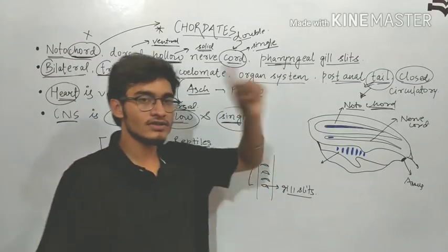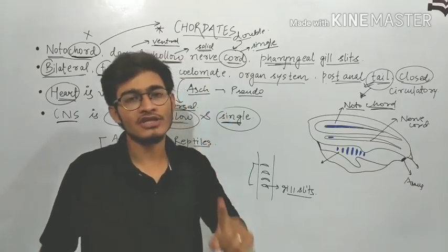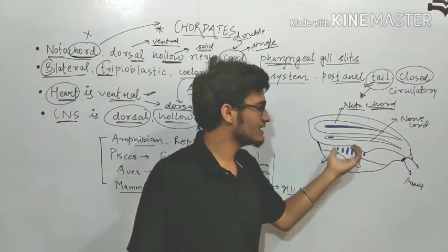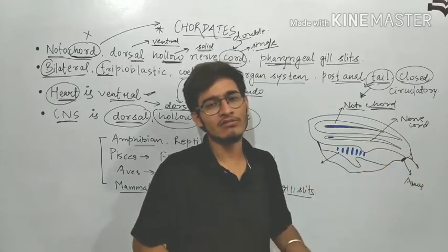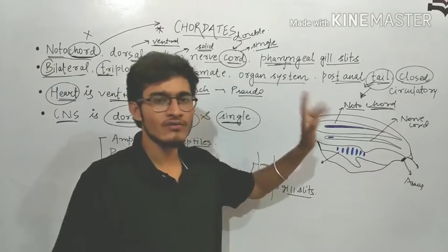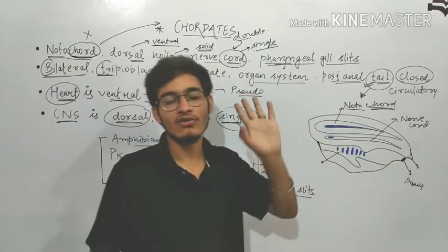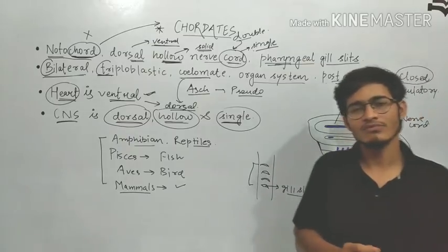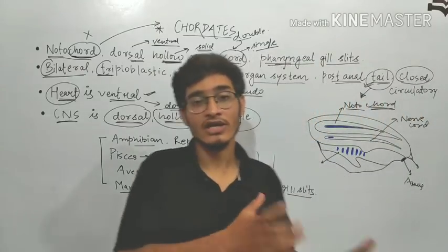The first thing is, notochord is the primary thing which is present in chordate. So it will be at the uppermost position, then nerve cord, then pharyngeal gill slits, and post anal tail you can easily memorize.